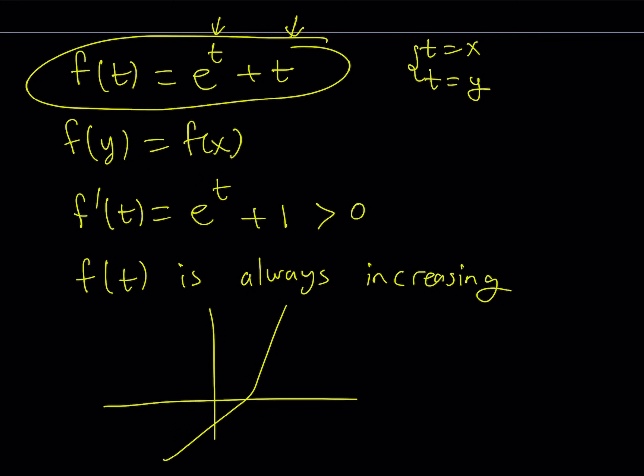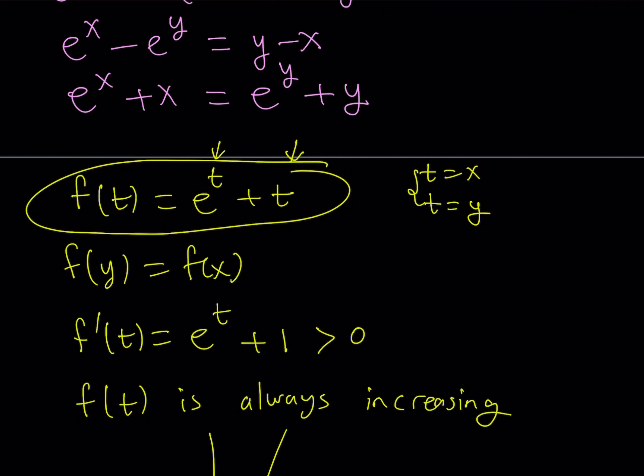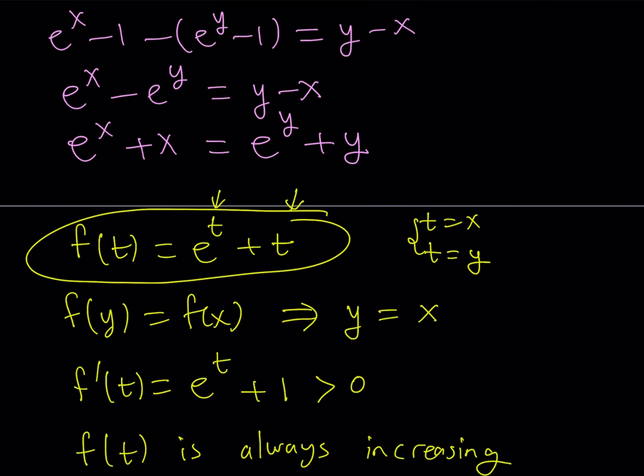So you're basically talking about a function that is always increasing, whatever that looks like. And it's continuous, so there are no holes or gaps or jumps or anything like that. And we're basically looking at the function at two different values and they're equal. So this implies f of y equals f of x implies y equals x.